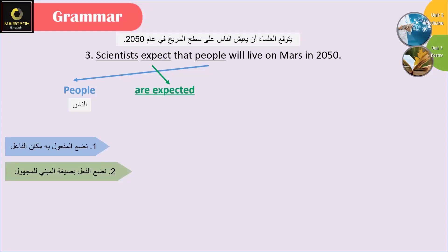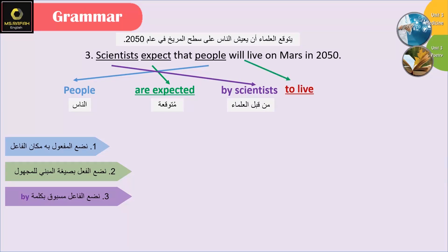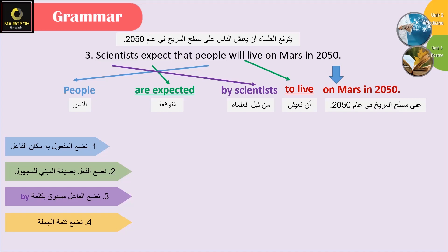People are expected by scientists to live on Mars in 2050. ننتبه للفظ كلمة thousand وكلمة Mars.